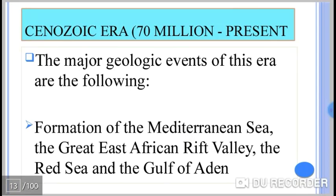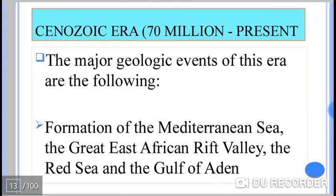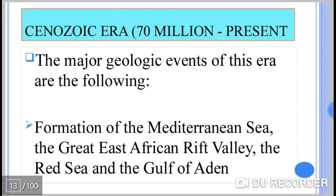The fourth era is the Cenozoic era, which covers from 70 million years ago to the present. This is the last era. The major geographical events occurring in this era include: the formation of the Mediterranean Sea, the formation of the Great Rift Valley of Africa and the Horn, and the formation of the Red Sea and the Gulf of Aden due to the separation of Africa from Asia.